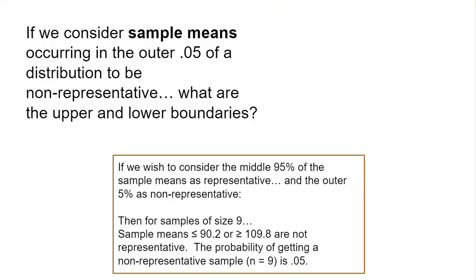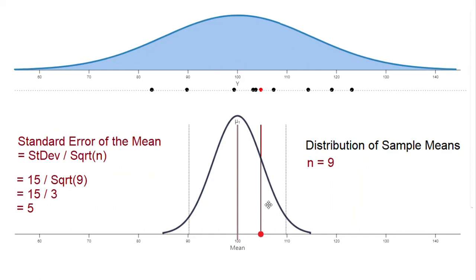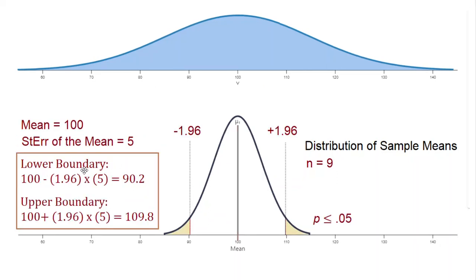Impressively, we can specify both the mean of this distribution of sample means — which is the same as the mean of the population — and we can calculate the standard error using a straightforward formula. The standard error is the standard deviation (15 in this case) divided by the square root of the sample size. If your sample size is 9, divide by the square root of 9; if it's 25, divide by the square root of 25. You crunch the numbers, get the standard error, and plug it into your formula to find your lower and upper boundaries.